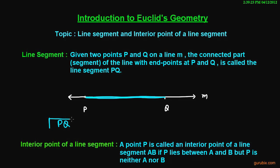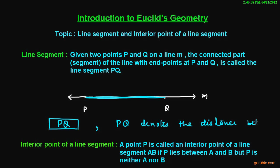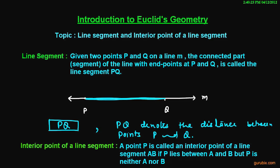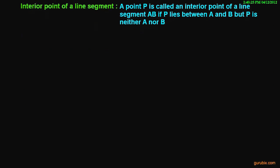This is known as the line segment P, Q. A line segment is a part of a line, and P, Q denotes the distance between points P and Q.